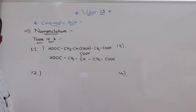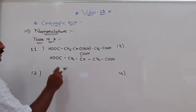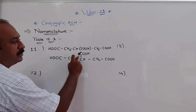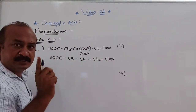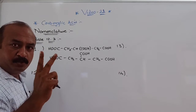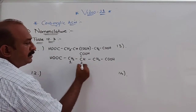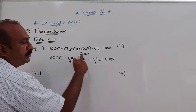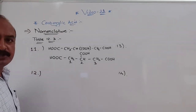Now, whenever more than two carboxylic acid groups are there, you have to remember one thing: you do not have to give a number to the COOH group. There is a rule that when more than two COOH groups are there, you must number only the other carbons. No need to give number to COOH.